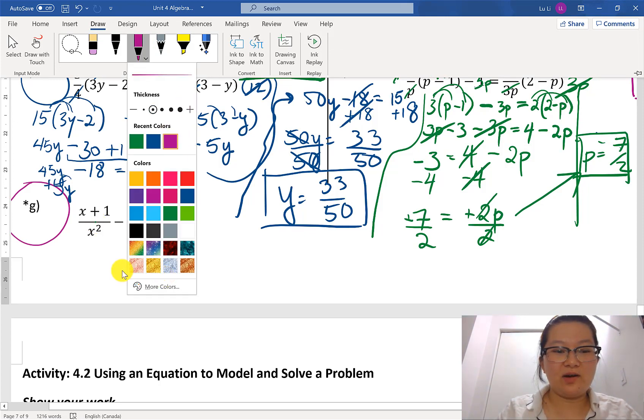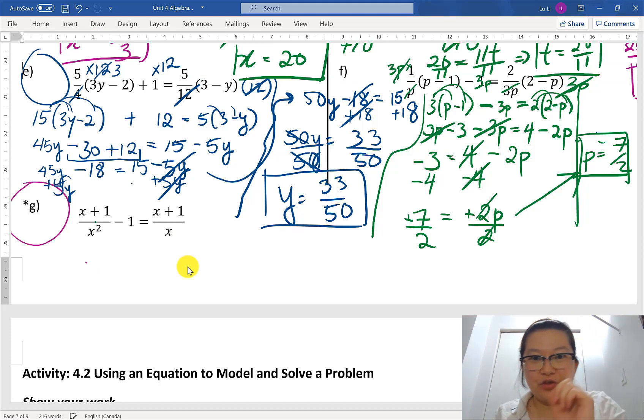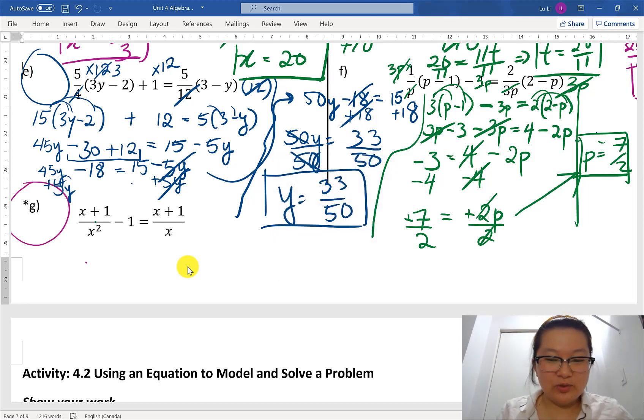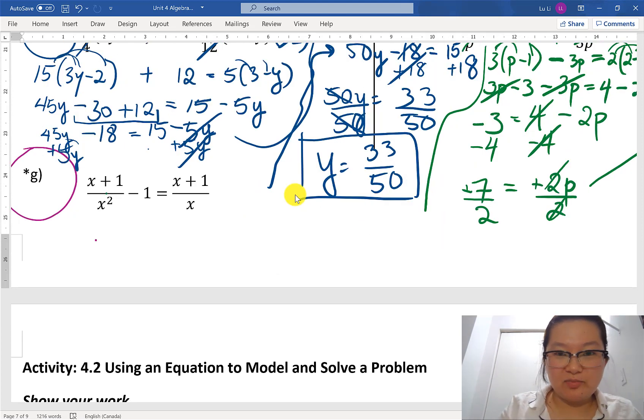However, if you would like to try G as a challenge for yourself, this is a good chance to pause the video and try yourself. If not, we'll do it together. So I'm going to zoom in. I may need a little bit space on the next page here, so it might get a little bit messy. Again, common denominator is going to be x squared. So I'm going to put x squared here. I'm going to change 1 times x squared is going to be still x squared. And I'm going to multiply x squared here in front.